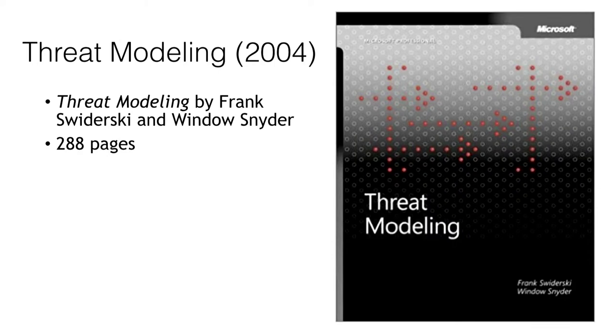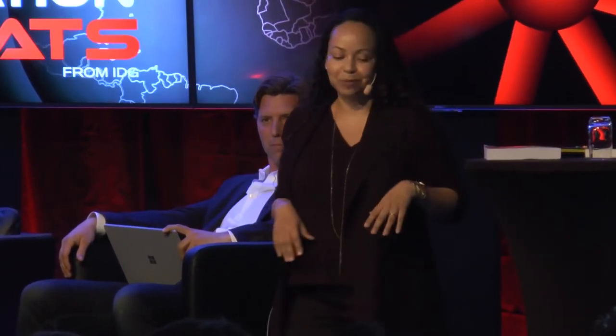I've got some books here — I'm a little concerned because I hear you guys haven't been asking questions, and I don't want to carry these back to San Francisco. So start thinking about questions, because I will give both books to somebody who asks an interesting question. The first is Threat Modeling, my book from 2004 — 288 pages. The publisher wanted 300 pages, but I thought it should be about 150 or 200. Honestly, I think it would have been a better book if it were about half as long.